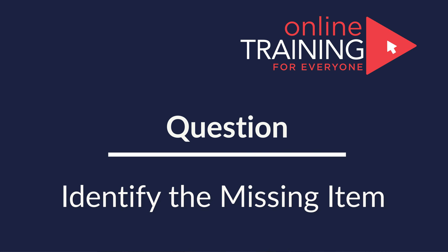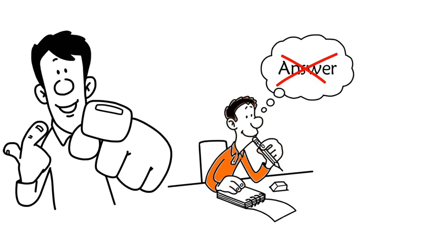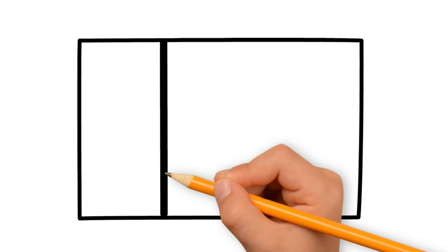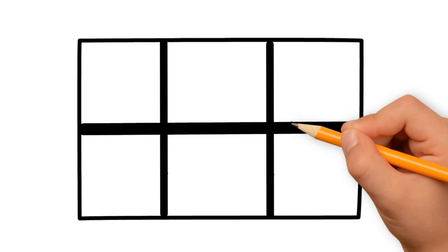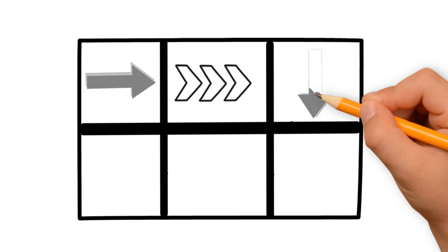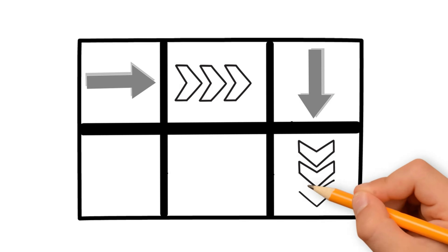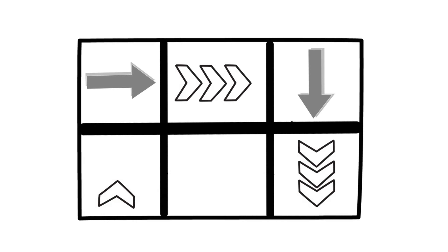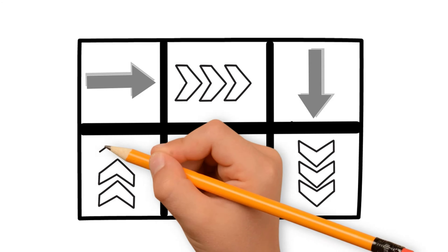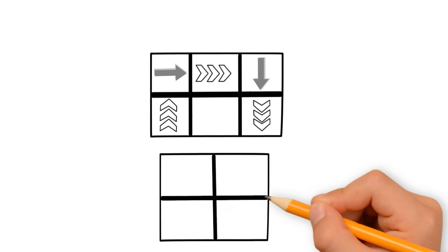Here's a cool question which is easy to understand but doesn't have an obvious answer. You're presented with a 2x3 matrix that has arrows inside. There are two types of arrows: solid arrows and arrows that consist of three different shapes. There are six possible spaces in the matrix — five shapes are present and one shape is missing.